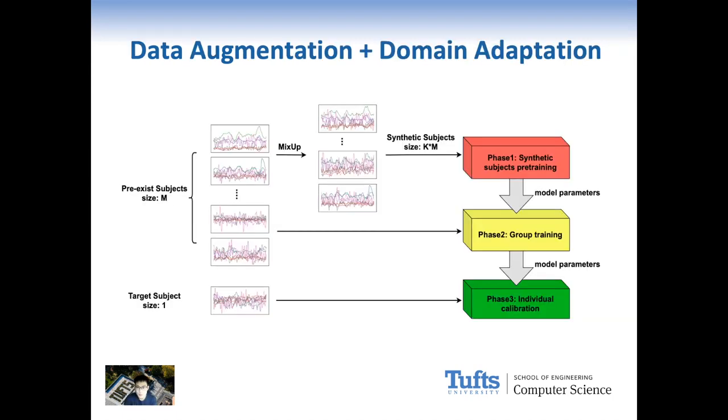To build a better personalized model for each subject, we propose a data computation plus domain adaptation pipeline. Our pipeline includes three phases. Say we want to build a model for subject I. In phase 1, we use all other subjects' training data to create synthetic data. We train a model on this synthetic data. This is motivated by the need for data augmentation.